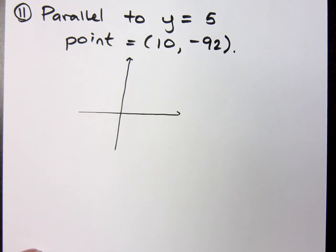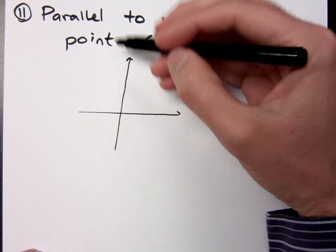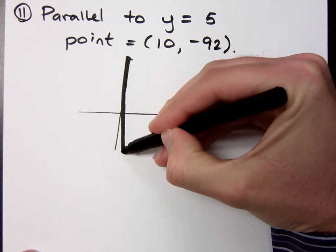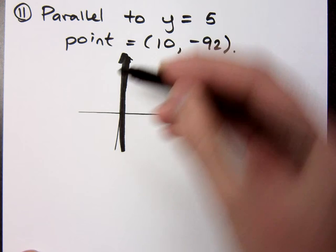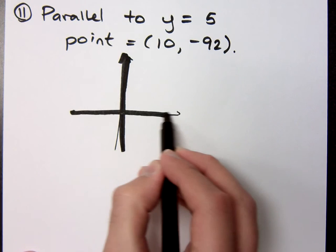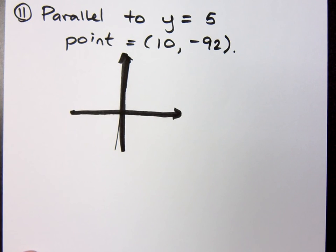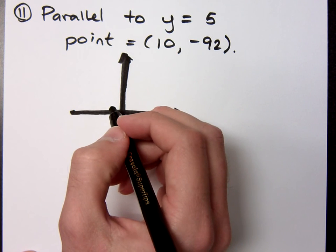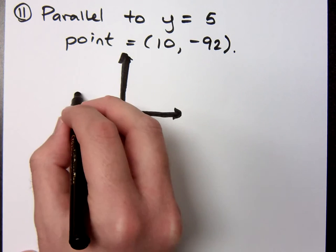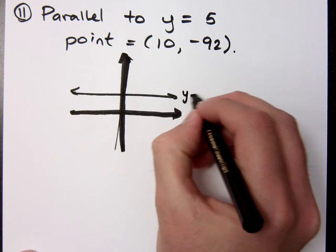That is crooked. Okay. I'm going to try to straighten this up a little bit. There we go. That's better. Now, what does y equals 5 look like? All lines are straight. It is a horizontal line that looks like this, right? Y equals 5.